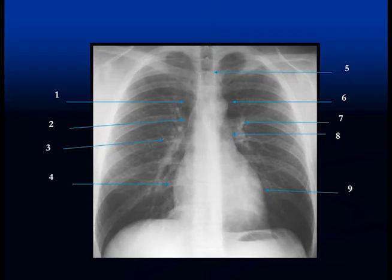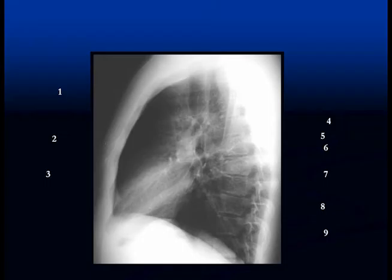Anytime you see a chest x-ray, you should look for these different structures. The more you see, the more you'll be able to recognize. Anytime you have consolidation in the lung, you're going to lose some of these borders.